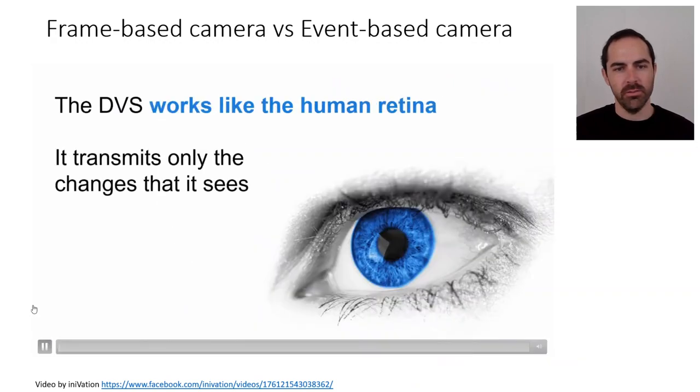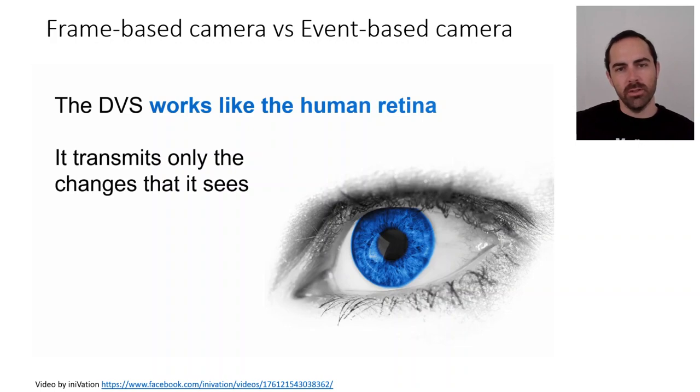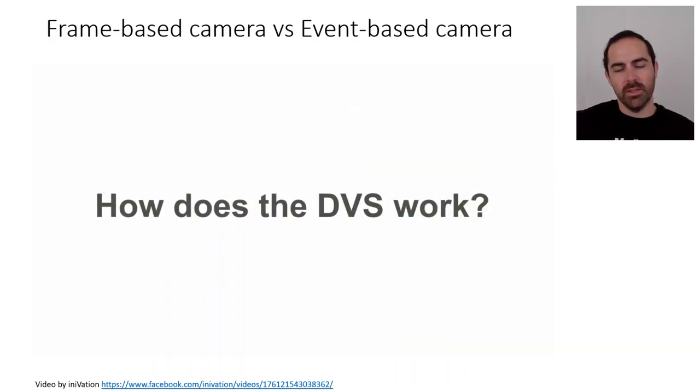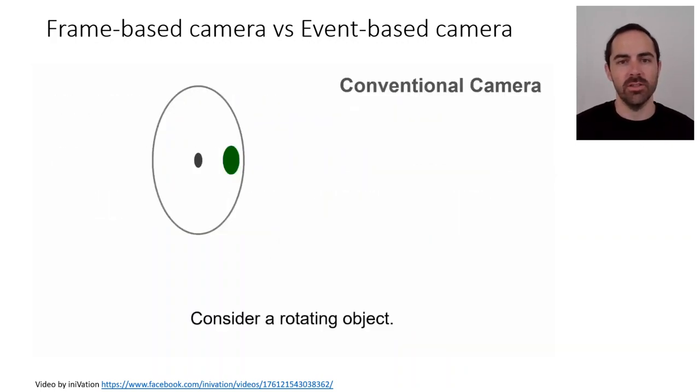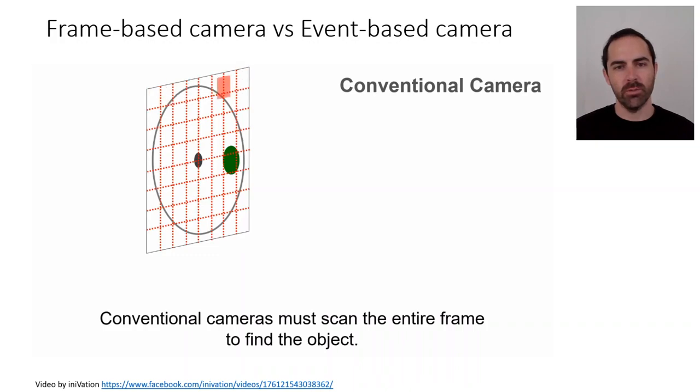This is yet another explanation of the pixels in the dynamic vision sensor by a company. The pixels work like the human retina and they only transmit the intensity changes. So a conventional camera when it's viewing this scene, what we would do is we would acquire an image and this image is full of all these pixels. It would go through all the pixels in the image.